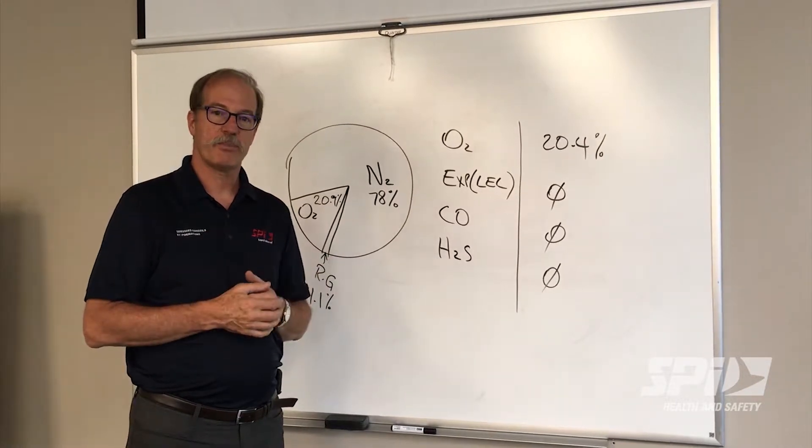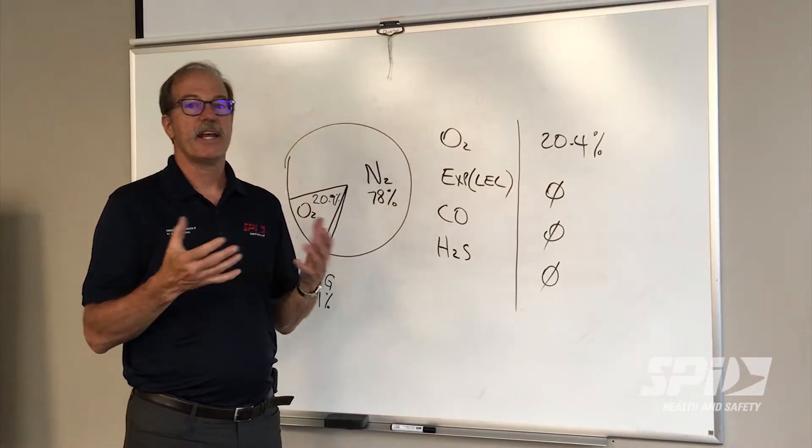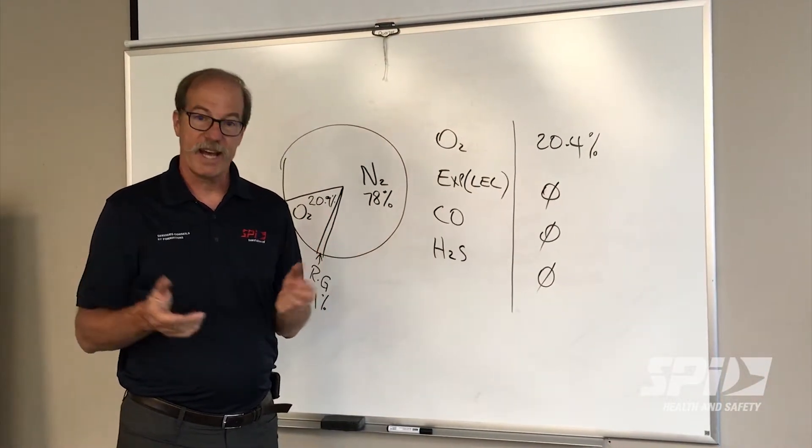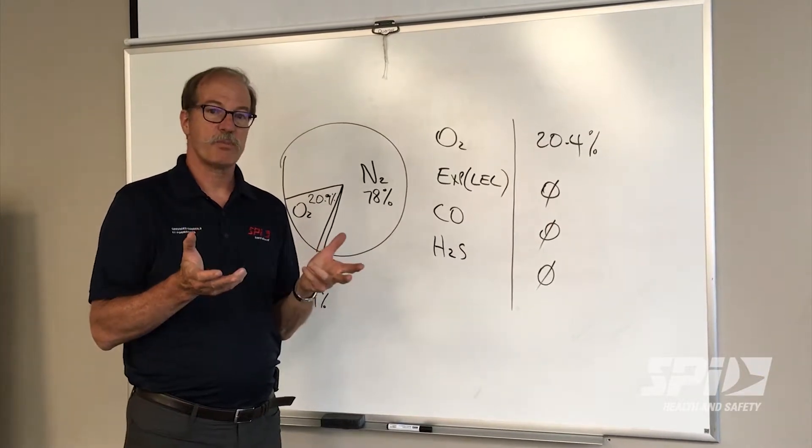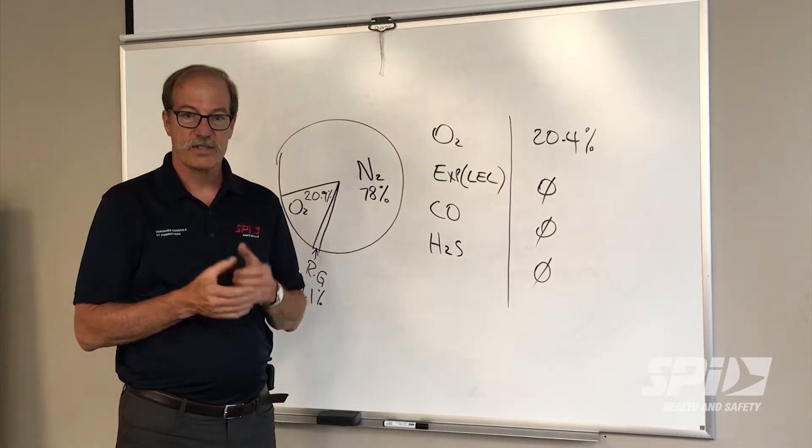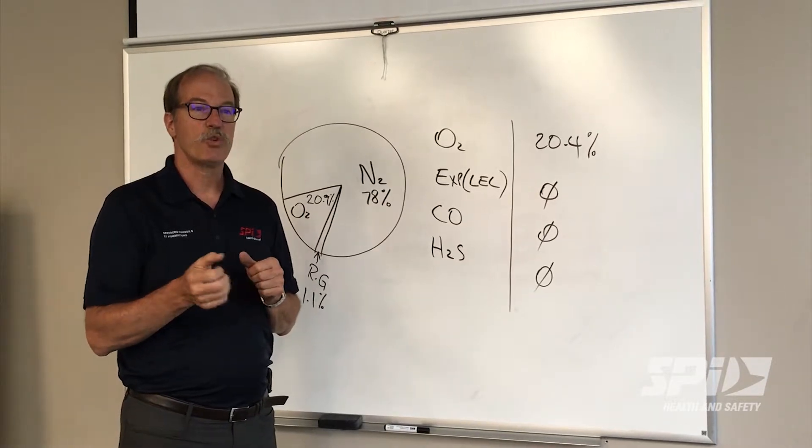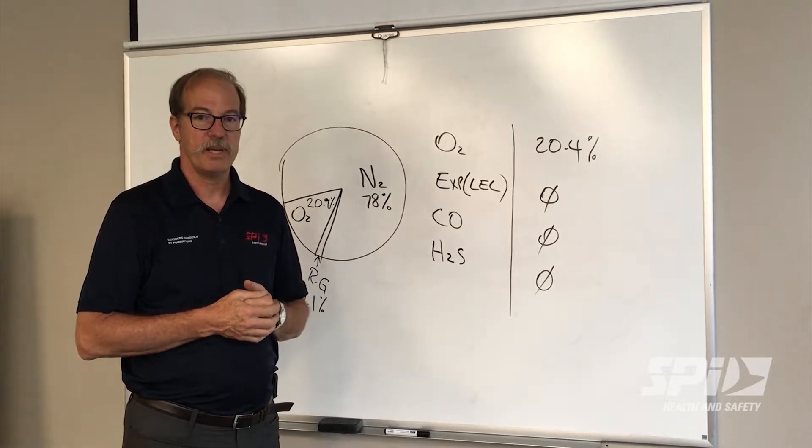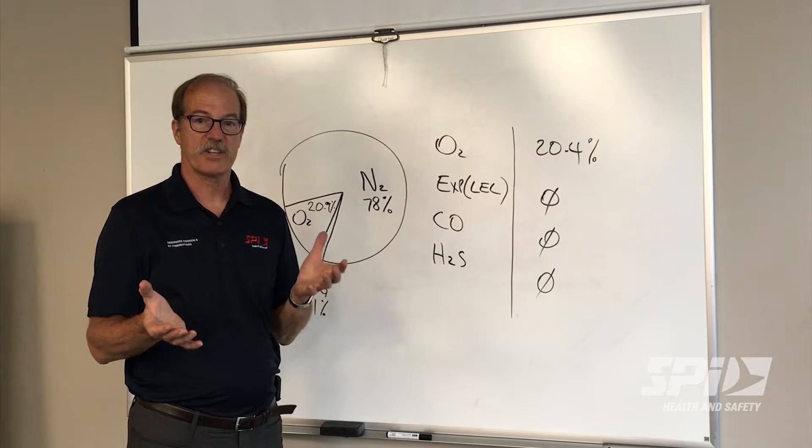What happened to that 0.5% oxygen? Did it get displaced by an unknown gas? If it was displaced by an unknown gas, it's not 0.5% - it may be 25,000 ppm of an unknown gas that got in there.